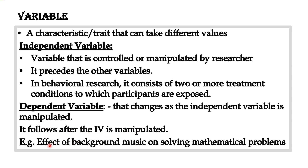For example, consider the effect of background music on solving mathematical problems. Introducing background music is our independent variable, because it comes first. After introducing the music, we observe the effect on solving mathematical problems — so solving the mathematical problem is our dependent variable.